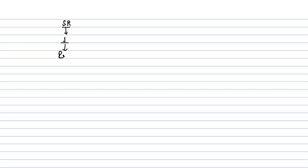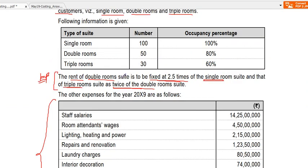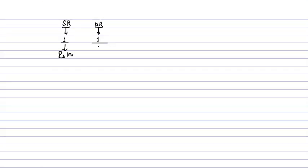Now for the calculation: let's say a single room is charged Rs. 100. The double room, as given in the question, is 2.5 times the single room rent — so that will be Rs. 250. So one double room is equivalent to 2.5 single rooms in terms of revenue. This is the basis for converting double room occupancy into equivalent single room units.